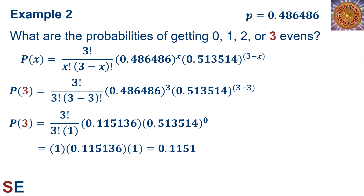Now for the probability of seeing all 3 spins landing as evens. The probability is 3 factorial divided by 3 factorial times 3 minus 3 factorial, all multiplied by 0.486486 cubed times 0.513514 to the 3 minus 3 power. The factorial part equals 1 — everything cancels. The 0.486486 cubed equals 0.115136, and 3 minus 3 equals 0, so the last term becomes 1. Multiplying all of this out gives us 0.1151.